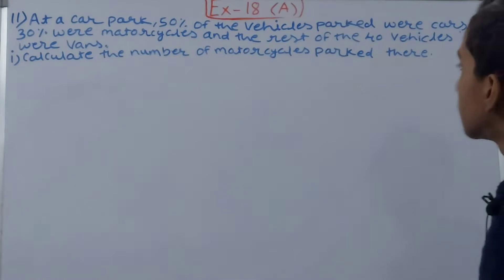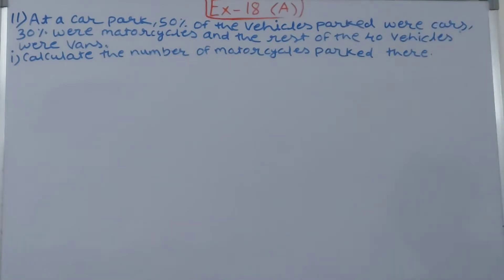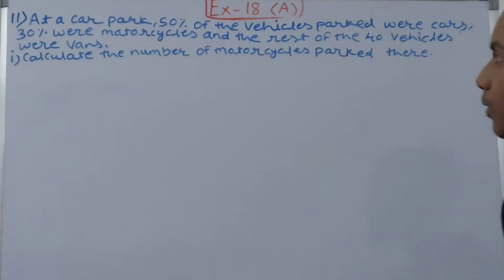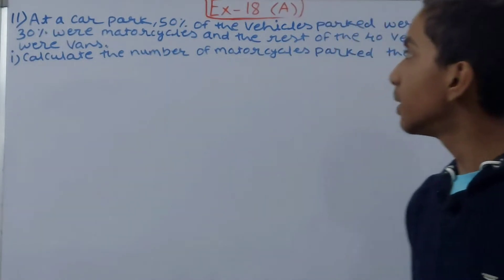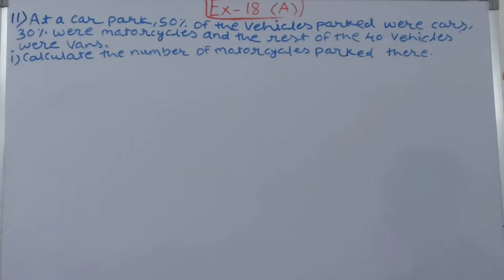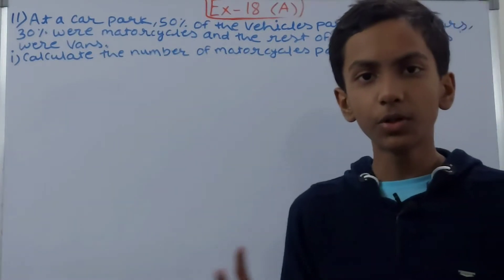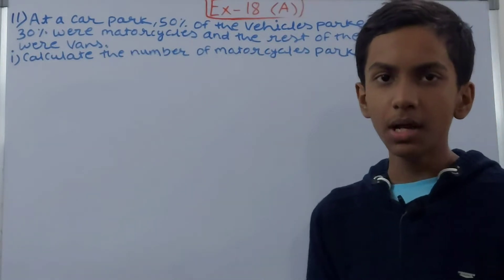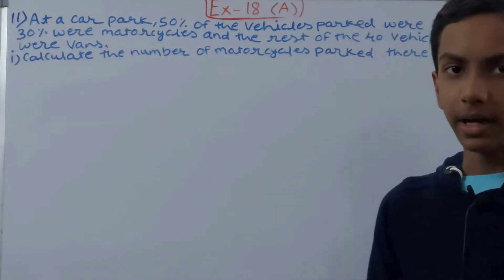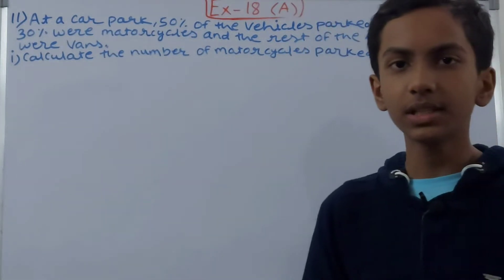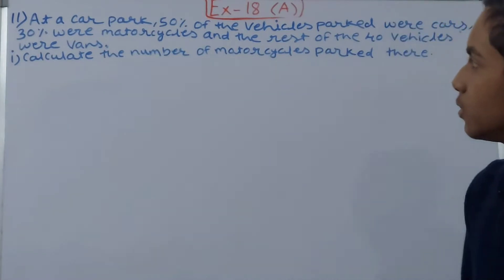The question is: at a car park, 50% of the vehicles parked were cars, 30% were motorcycles, and the rest of the 40 vehicles were vans. So 50% were cars, 30% were motorcycles, and the remaining 20% represented 40 vans. The question asks us to calculate the number of motorcycles parked there.